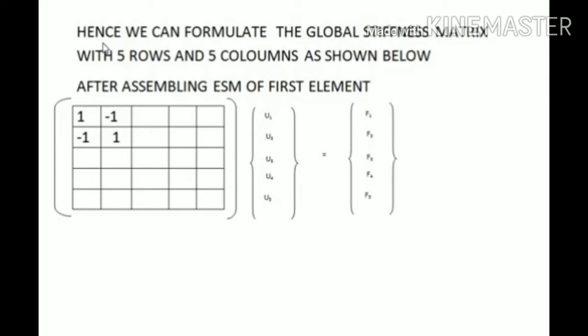We can formulate the global stiffness matrix with 5 rows and 5 columns, because we have 5 nodes and each node has a single degree of freedom. The matrix has rows R1 through R5 and columns C1 through C5, giving a 5 × 5 matrix.